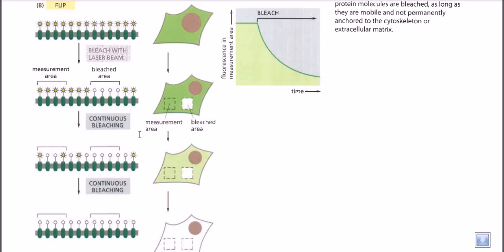To prove our experiment, we measure the fluorescence in a different area of the cell — not the area that was bleached. This unbleached area is monitored, and what we observe is that the fluorescent activity in this separate area is also being decreased over time.